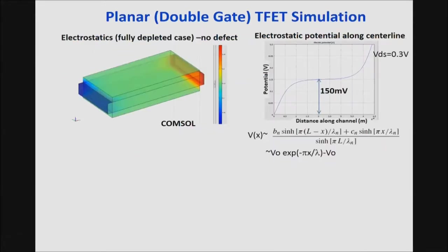The first structure I'd like to describe is the planar-type embodiment. The first step is to understand the potential variation between source and drain along the channel. The frame of reference for our potential calculations uses COMSOL electrostatic simulations, and the results agree very well with the simple analytical relation described by Yuan Taur for the subthreshold behavior of MOSFETs.